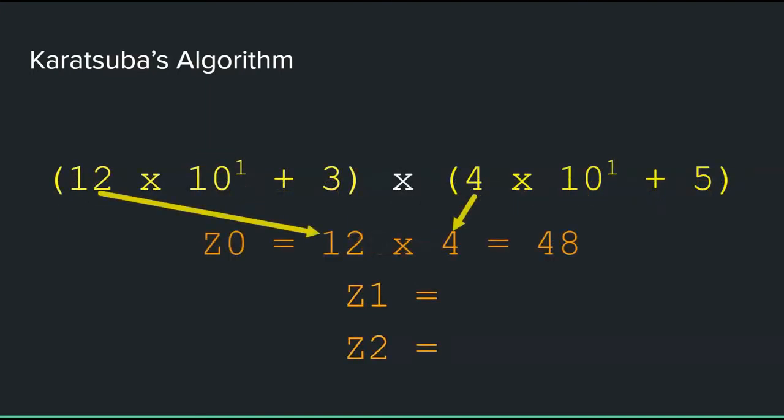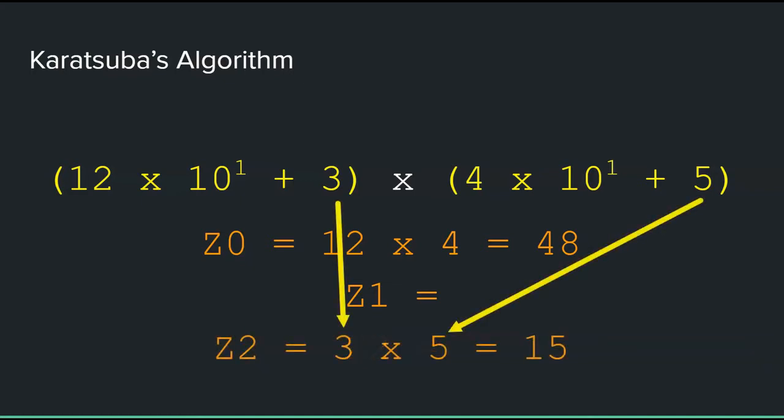To get Z0, just multiply the first digits of the number. So, in this case, that's 12 and 4. 12 times 4 makes 48. To get Z2, just multiply the last digits. So, in this case, that's 3 and 5. 3 times 5 is 15.